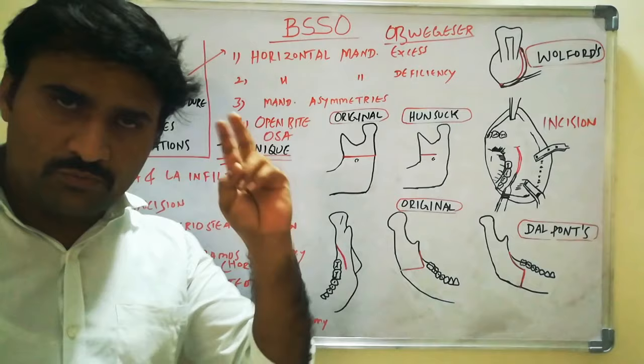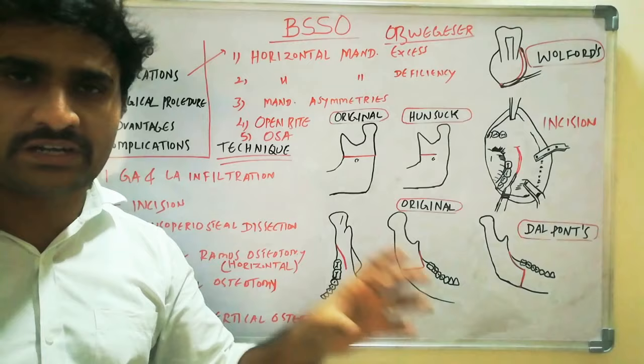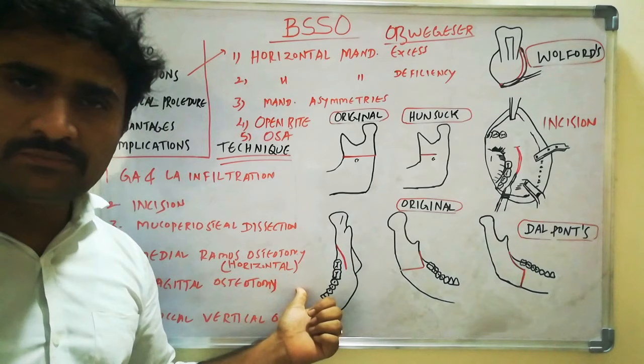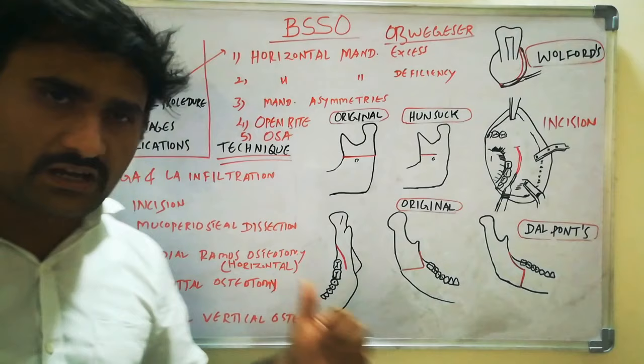There are three bone cuts in BSSO, which are very important regarding their design. The first bone cut is medial ramus osteotomy, also called the horizontal osteotomy. The second is the sagittal osteotomy. The third is the buccal vertical osteotomy.